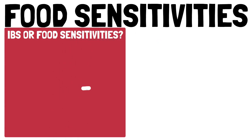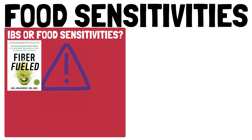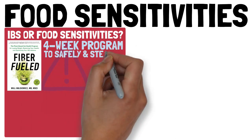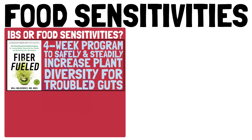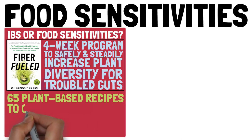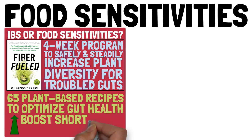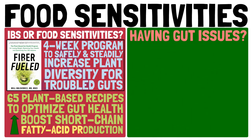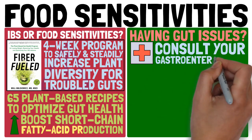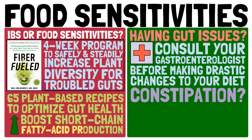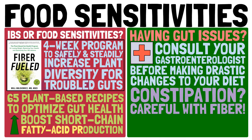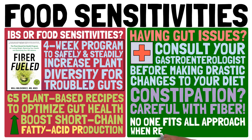If you have IBS or severe food sensitivities, you obviously cannot just start eating the foods you are sensitive to. Dr. Bulsiewicz included a four-week program in his book to safely and steadily increase plant diversity for those troubled by fiber or FODMAPs. It features 65 plant-based recipes designed to optimize gut health and maximize short-chain fatty acid production. If you have any gut issues, please consult a gastroenterologist before making any drastic changes to your diet. Especially if you are currently constipated, you cannot simply increase your fiber intake — there is no one-size-fits-all approach when it comes to restoring gut health.